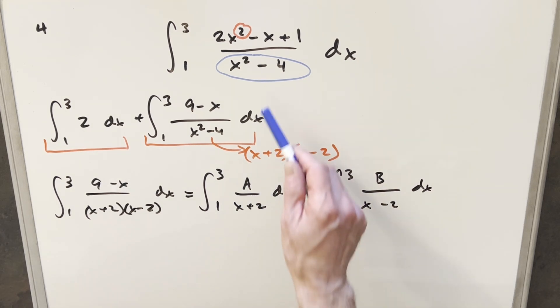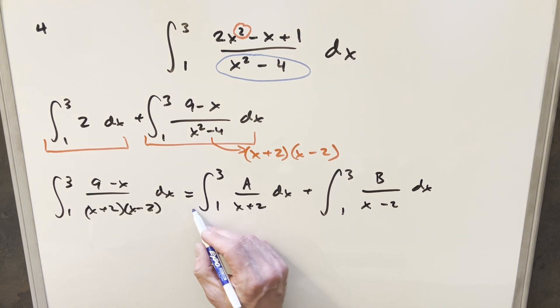But what I want to do is get back to this discontinuity that we have at x equal to two. Well, just notice in this first integral, there's actually no problem here in the first integral between one and three. We're not dividing by zero. So this one we could just do, we don't have to worry about. So we'll put this one off for later.